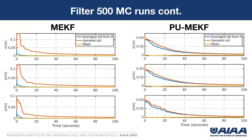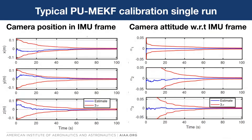If we compare the average standard deviation from the filter against the actual sample standard deviation for the errors, we get the following results. This figure shows the comparison — our desire is that the orange and blue lines match, because that means the filter is consistent, having a good estimate of the actual covariance. We also see that the mean is around zero, which is expected. Comparing the standard MEKF and the partial update MEKF, the partial update is clearly helping the MEKF perform in a more consistent way. For a single typical run, we see that the camera position to IMU converges to zero, and the error for the camera attitude with respect to the IMU is also converging to zero — meaning the filter is able to find the actual calibration.